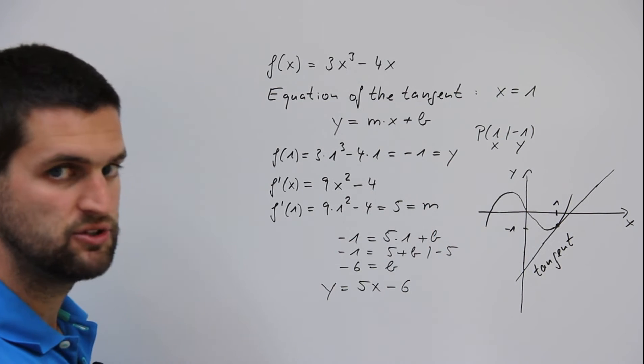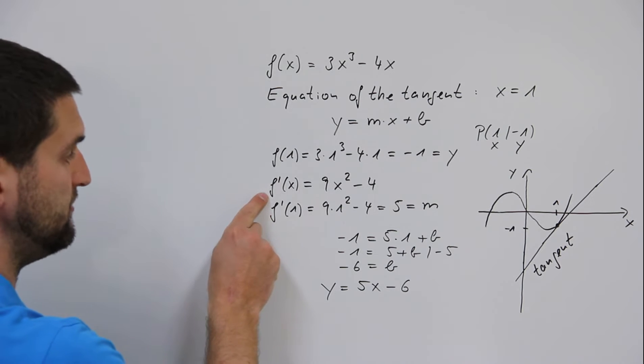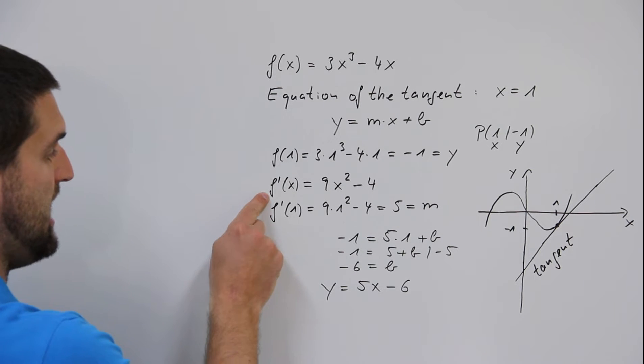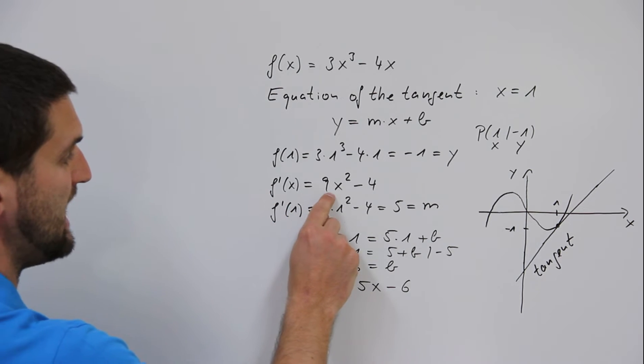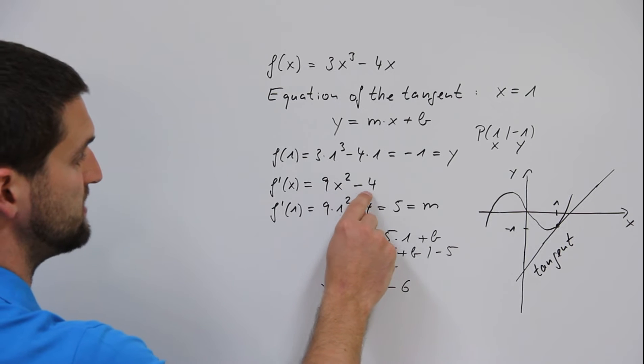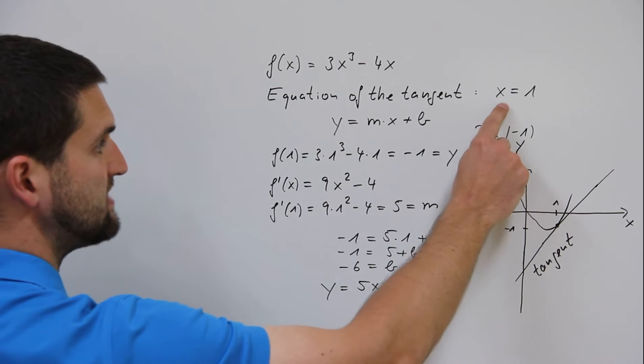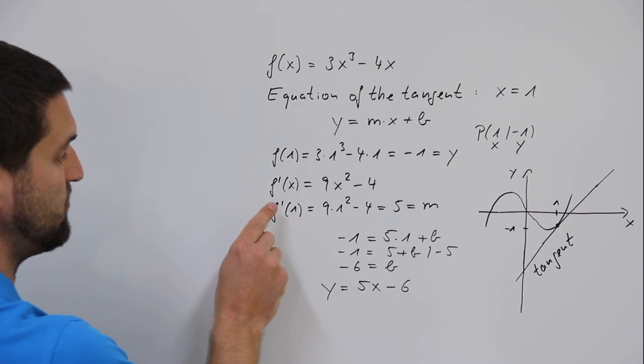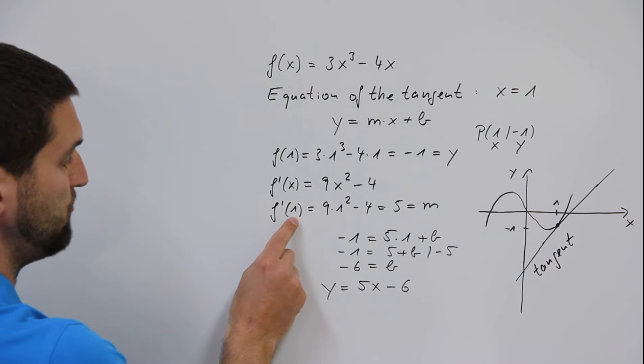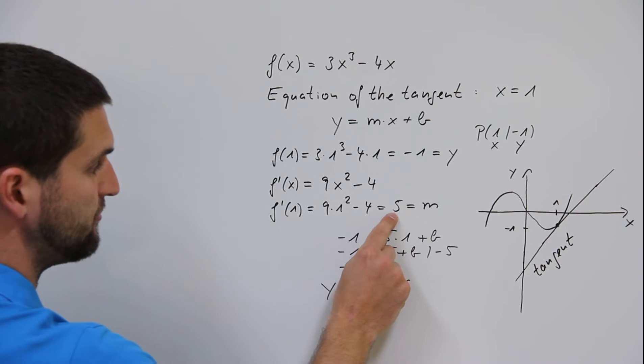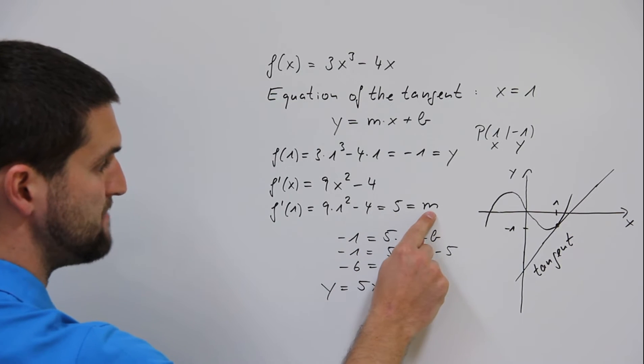Next step you have to do is find the first derivative of f(x). f'(x) equals 9x² minus 4. Set in x equals 1 in the first derivative. f'(1) equals 5 equals m, the slope.